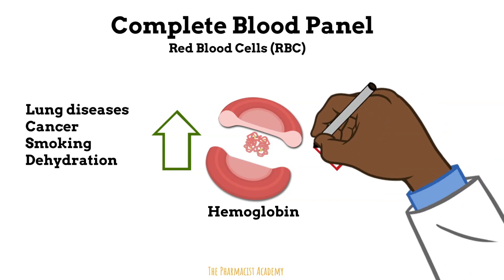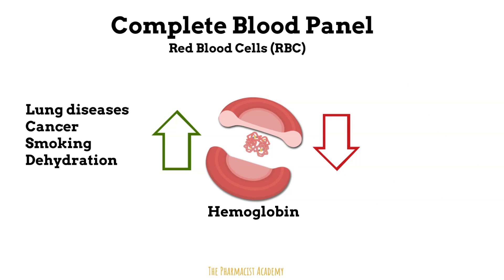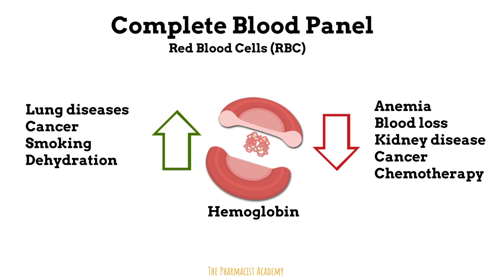For patients who present with low hemoglobin, the first thing we think about is usually anemia, where patients don't have enough healthy red blood cells, and therefore a decrease in hemoglobin is the result. Blood loss is straightforward. In kidney disease, your kidney is not making enough erythropoietin, so it can't go into the bone marrow and stimulate the production of red blood cells, which will lead to a decrease in red blood cells and hemoglobin.